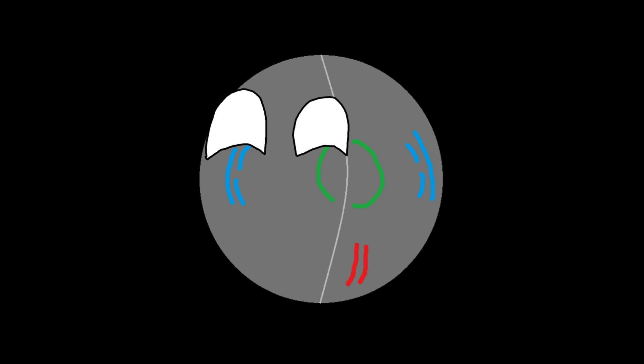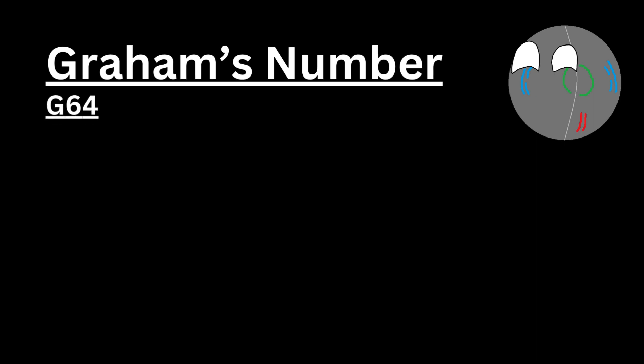This is Graham's number. Graham's number — which I'll call g64 — is part of a sequence I like to call the Graham sequence. It is built upon these levels of hyperoperation.